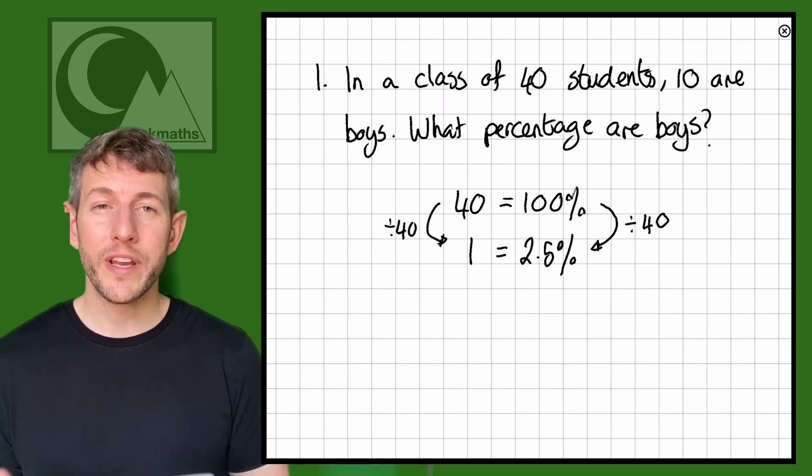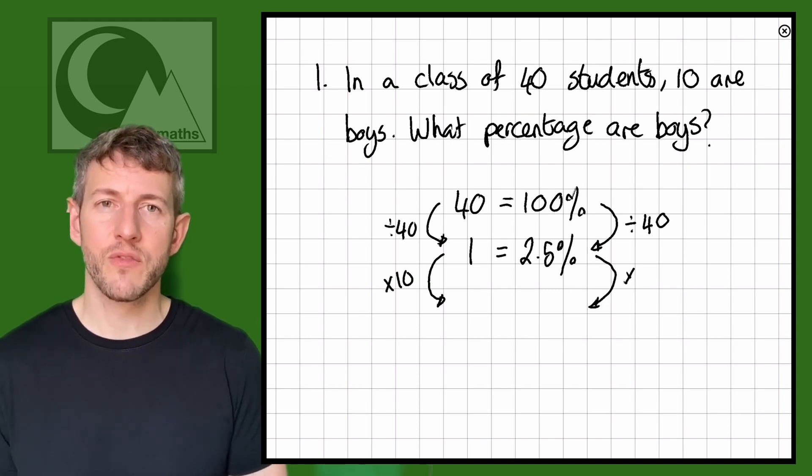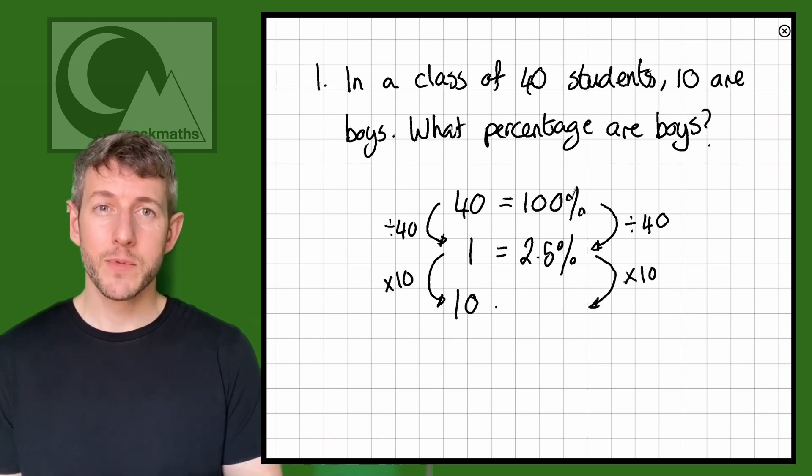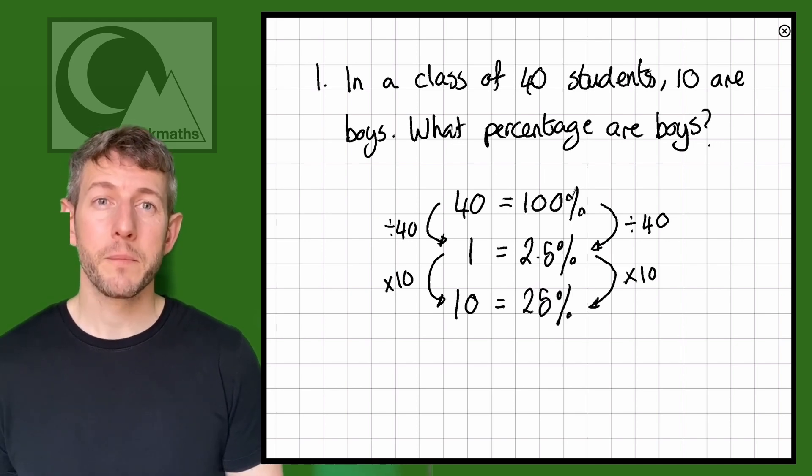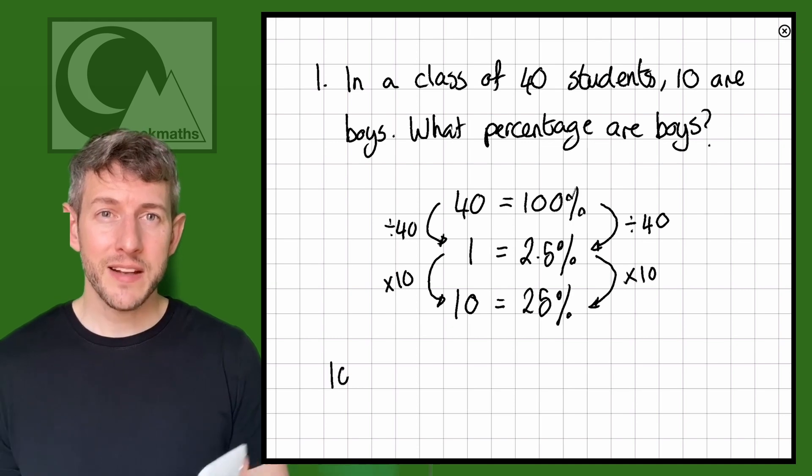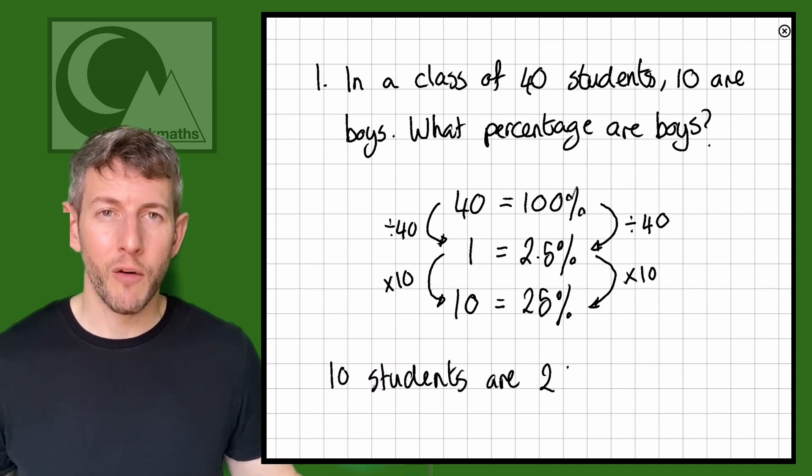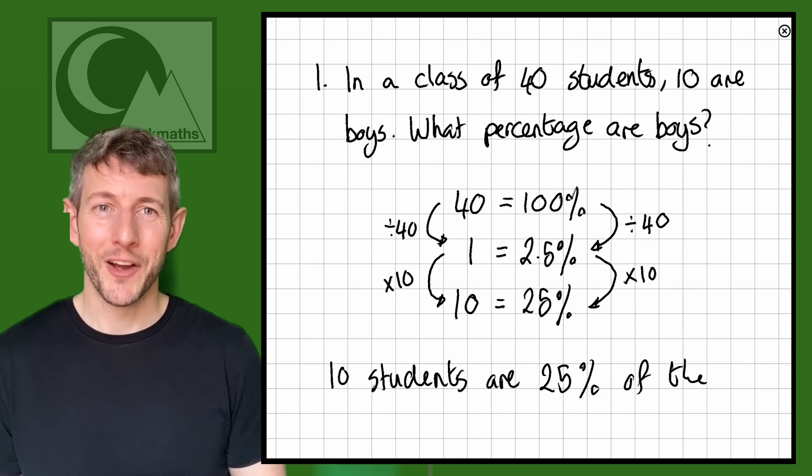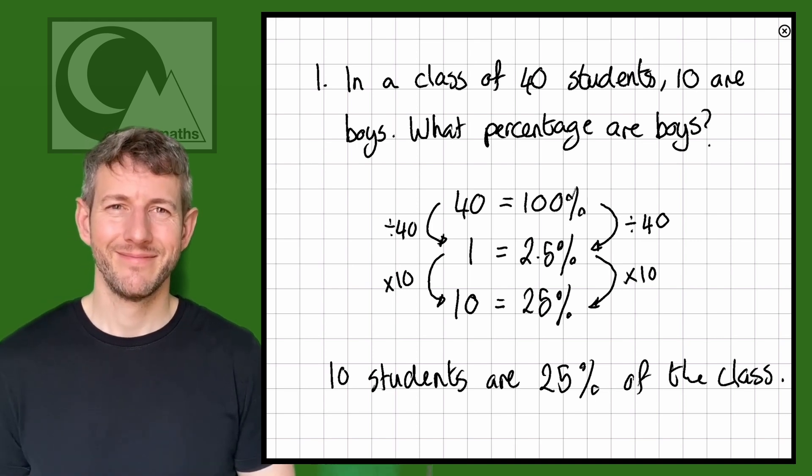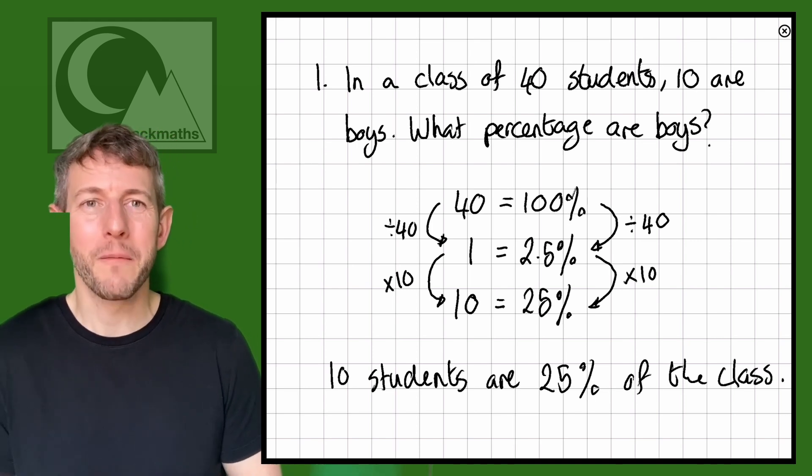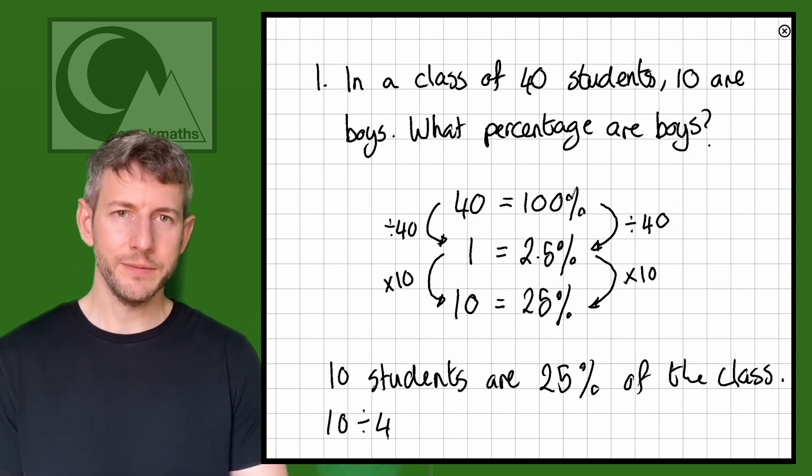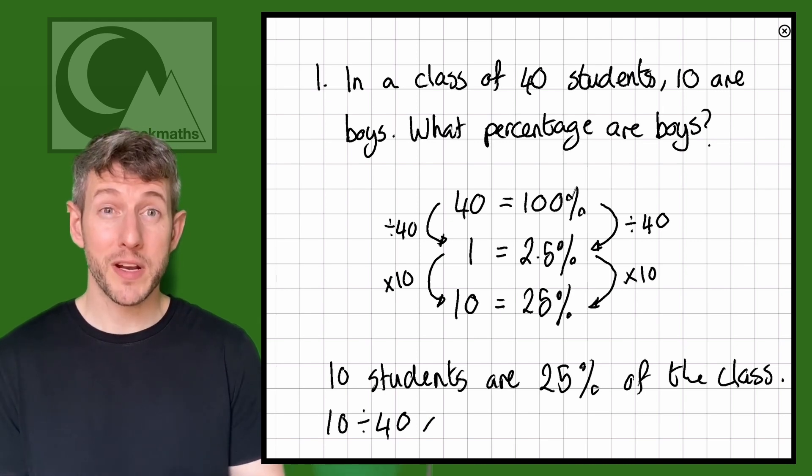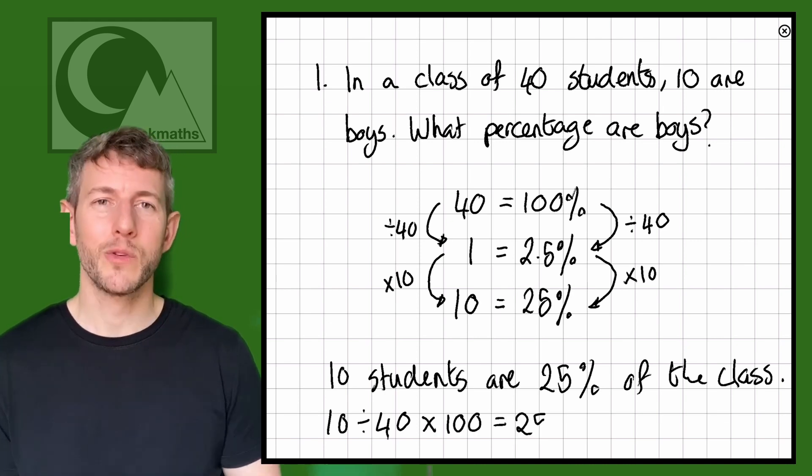Now we know that there are 10 male students. So we want 10 lots of that. So 10 times 1 gives us the 10 students, 10 times 2.5 gives us 25. So that means 10 students is worth 25% of the whole class. Let's also just confirm that with the quick method. So the quick method would be 10 out of 40, which means 10 divided by 40 times 100 equals 25%.